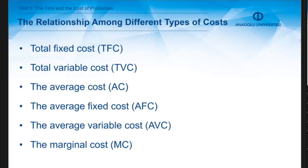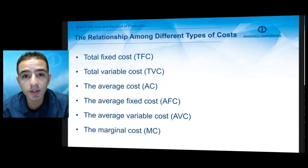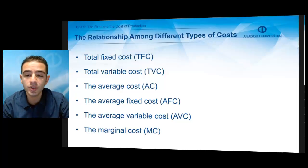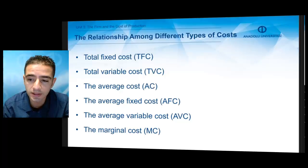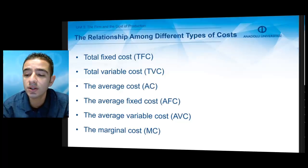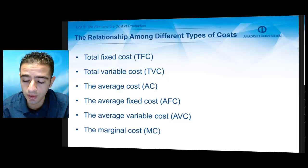The average variable cost measures the variable cost per unit of output. Finally, we have marginal cost, which refers to the cost of producing the last unit of output. Marginal cost is important because it shows how the total cost changes based on changes in output.